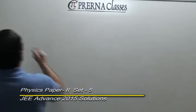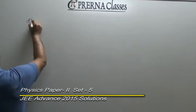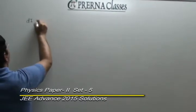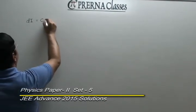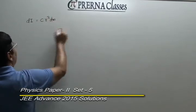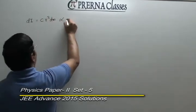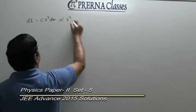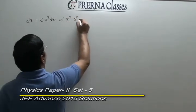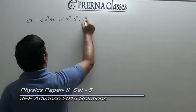This is the second paper of physics, the first section being video answer type. The first question dealt with two solid spheres with variable densities. We know that the moment of inertia of a thin spherical shell is proportional to r² dm, which is proportional to r² dr dρ.